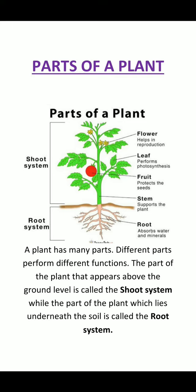The part of the plant that appears above the ground level is called the shoot system, while the part of the plant which lies underneath the soil is called the root system.